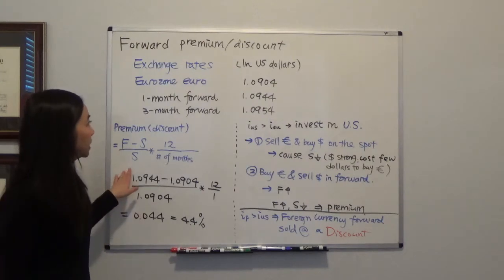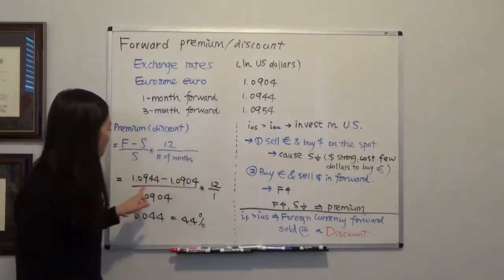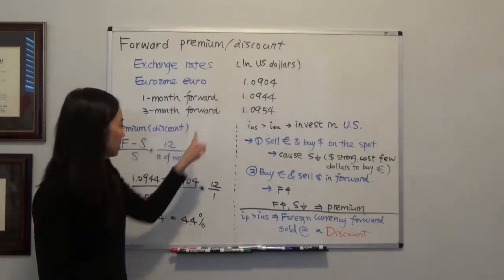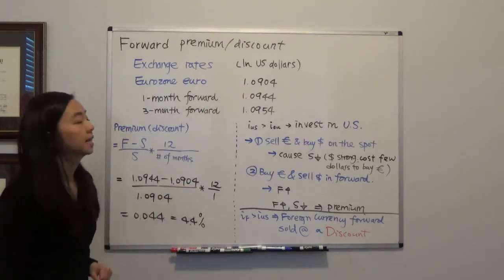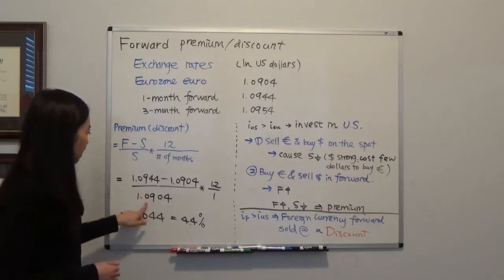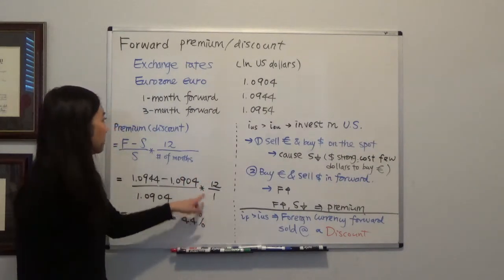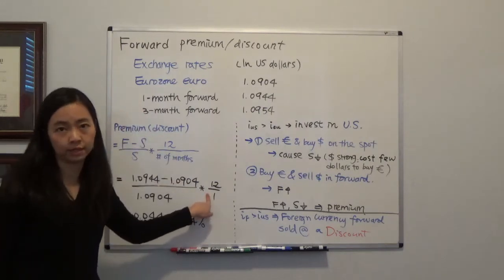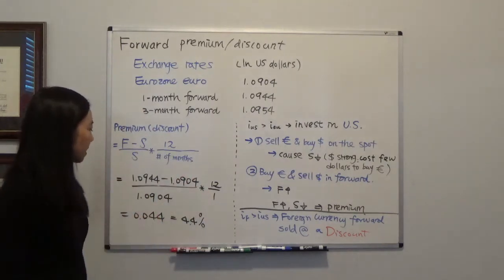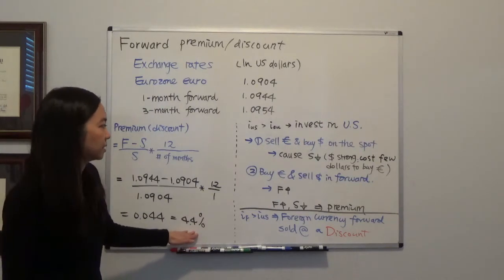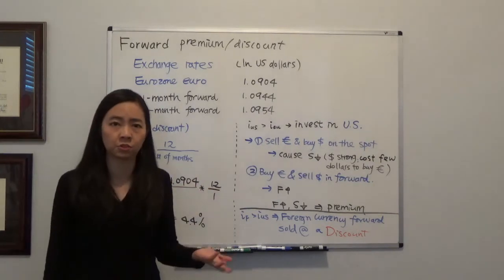So what we'll do is use the forward rate 1.0944 minus the spot rate 1.0904 divided by the spot rate times 12 divided by the number of months, and because it's one month it's just one. After you calculate that you find it's 4.4%. So you'll be asking how is this euro forward being sold at a premium.